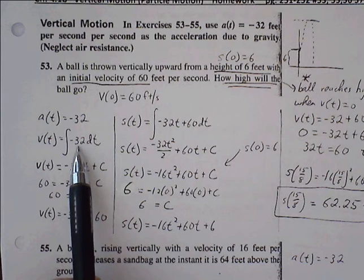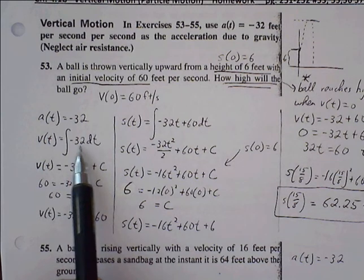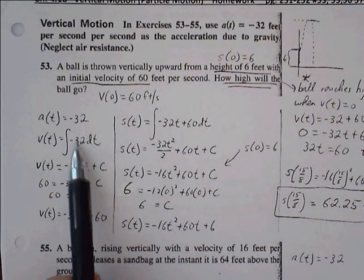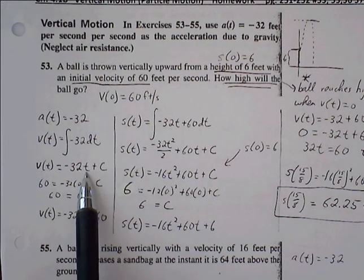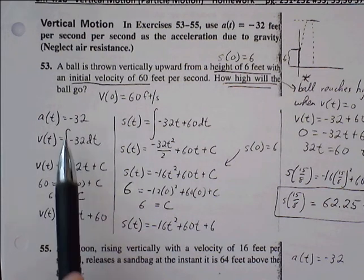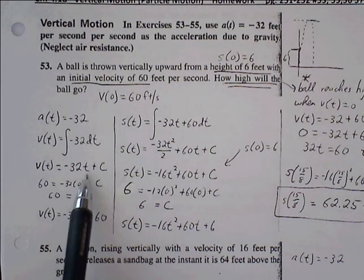Remember the derivative of a constant, the derivative of a linear is a constant, so the integral of a constant must move us back to a linear. So negative 32 becomes negative 32t, and then indefinite integral, we always have a plus C at the end.